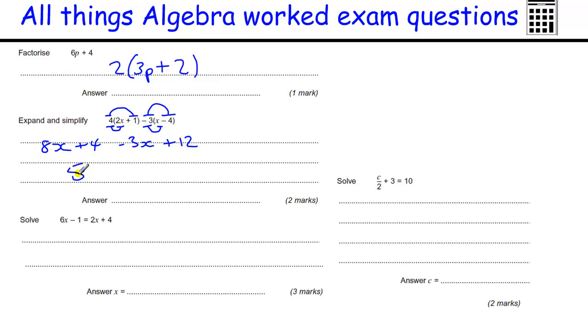So 8X take away 3X is 5X, and plus 4 plus 12 is plus 16. Remember when you're combining parts of an algebraic expression, you keep the sign in front of the number or letter when you're combining it.